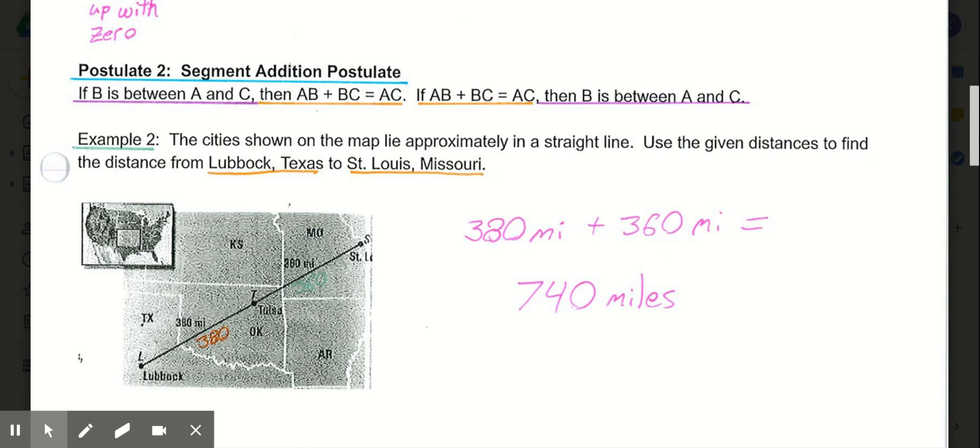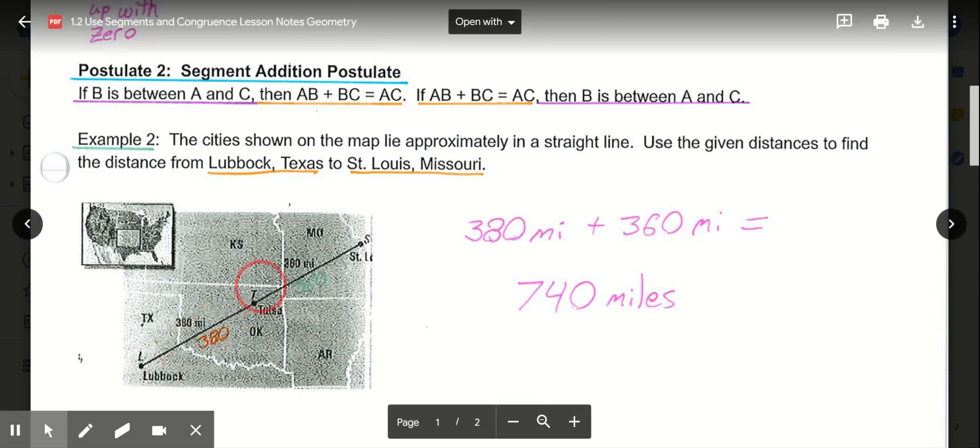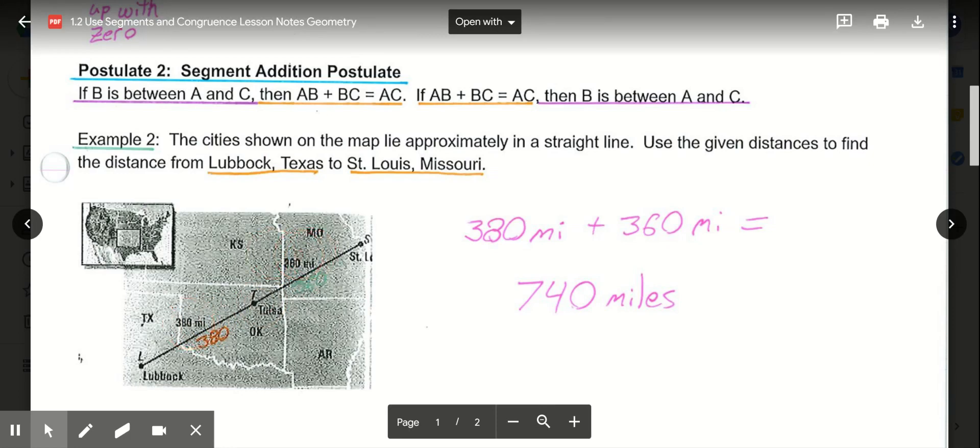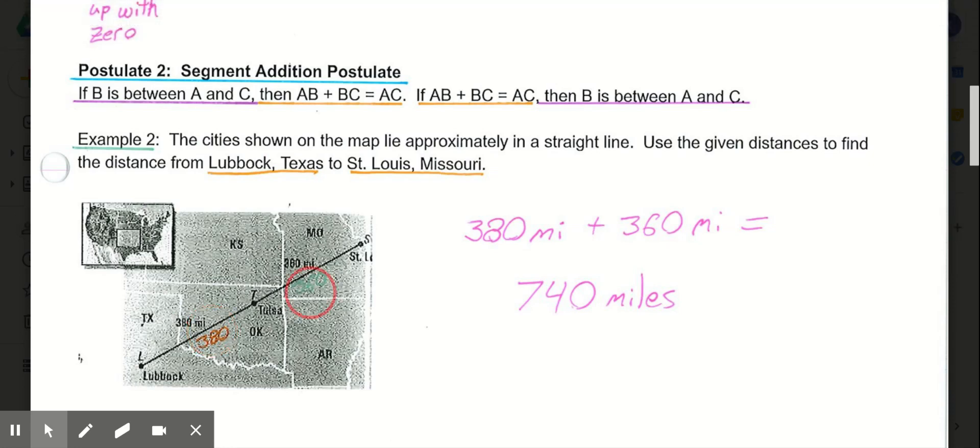Now example two. Example two says the cities shown on the map lie approximately in a straight line. So because they're approximately in a straight line, we're going to make the assumption that it is a straight segment. Use the given distances to find the distance from Lubbock, Texas to St. Louis, Missouri. So in this case, what we know is from Lubbock, Texas to Tulsa, it's 380 miles. And then from Tulsa to St. Louis, it's another 360 miles. So I know those didn't print too clear, but it is 380 miles and 360 miles. So we can use the segment addition postulate, take that length of Lubbock to Tulsa, and then the length from Tulsa to St. Louis, and add those together, and our distance from Lubbock to St. Louis would be 740 miles.